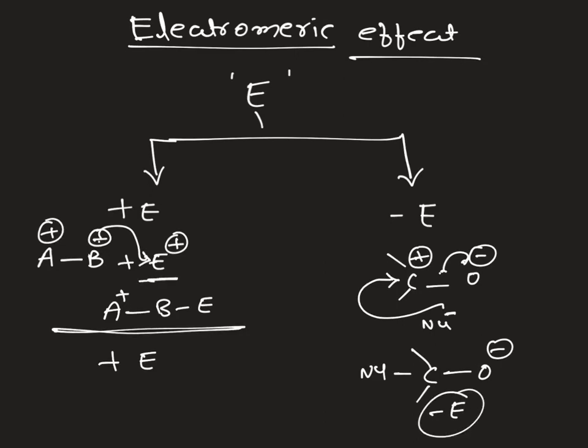In the +E effect, the pi bonded electrons are shifted toward the attacking reagent. This effect is observed only in presence of a polar reagent. If we remove the electrophile or nucleophile, the electrons come back and reform the pi bond. That is why this effect is a temporary effect.